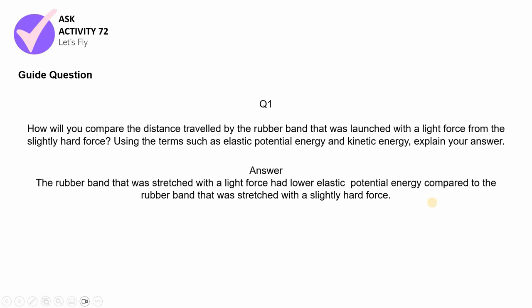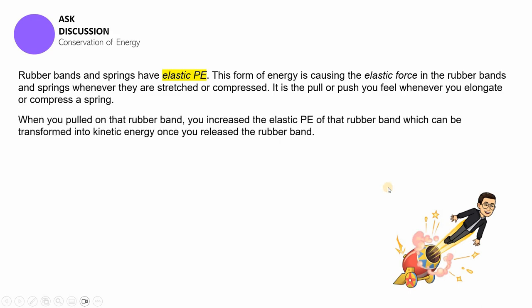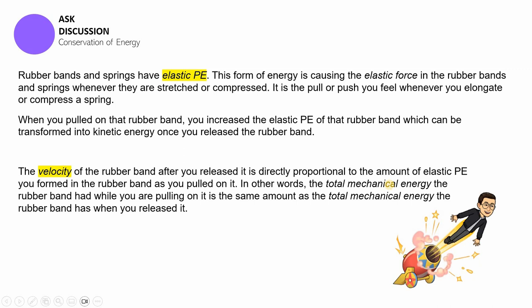We are done with the second part — Activity Number 72, 'Let's Fly.' Conservation of energy is seen in those examples. Rubber bands and springs both have elastic potential energy. This form of energy causes the elastic force whenever they are stretched or compressed. It is the push or pull you feel when you elongate or compress a spring. When you pulled on the rubber band you increased its elastic potential energy, which is then transformed into kinetic energy once the rubber band is released.